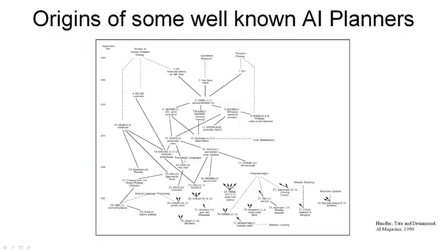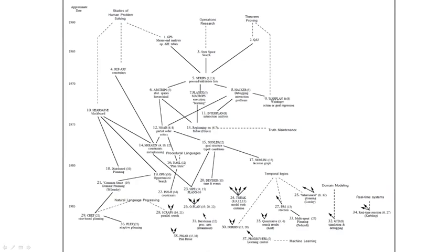There's a diagram in the 1990 review paper which tries to trace some of the historical connections between the different planners, the techniques they drew on, and how they built on one another. It's worth looking at that in detail — perhaps you could pause the video at this point and take a good look at some of the techniques and areas shown. There's an online version of this diagram also available at high resolution if you can't see it clearly in the video.